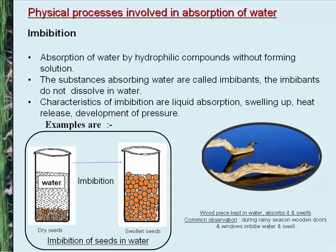Imbibition is the absorption of water by hydrophilic compounds without forming a solution. The substances absorbing water are called imbibents, and imbibents do not dissolve in water. Characteristics of imbibition are: liquid absorption, swelling up (increase in volume), heat release, exothermic process, and development of pressure. Examples include imbibition of seeds in water and a wood piece kept in water swelling up. A common observation is that during the rainy season, wooden doors and windows imbibe water and swell.